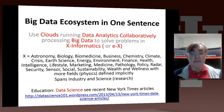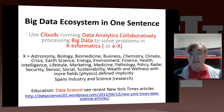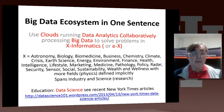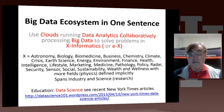Where X runs over these different values: astronomy, biology, biomedicine, business, chemistry, climate, crisis, earth science, energy, environment, finance, health, intelligence, lifestyle, marketing, medicine, pathology, policy, radar informatics, security, sensor, social, sustainability, wealth and wellness, and many other fields like physics, which are defined implicitly by the activity in the domain but not given a specific name.